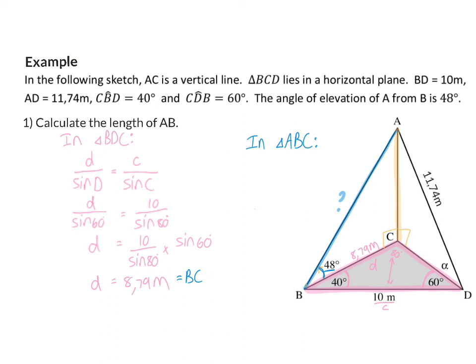So if we focus on angle B, we have our adjacent side, and we need our hypotenuse, and that will be cos of angle B.